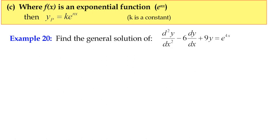We've looked at what happens when the f(x) function on the right-hand side is polynomial. In Example 19, we looked at trigonometric functions. Now we're going to look at what happens when the right-hand side is an exponential function.